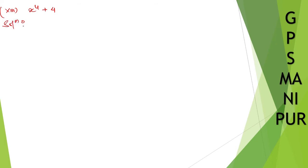Solution. So here, how to do this equation? I can write down x square plus 4. 4, I can write down as 2 square. But if you look here, it doesn't make any sense, because a square plus b square — we don't have any formula for that. So what we are going to do is a square plus b square.